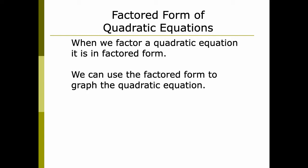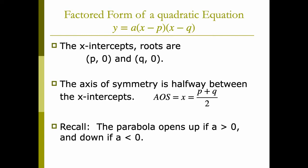Because when we factor them, we find solutions — we find out where our quadratic, our parabola, crosses the x-axis. Our factored form of a quadratic equation is y equals a times (x minus p) times (x minus q). The x-intercepts, the roots — also called solutions — are the points (p, 0) and (q, 0).